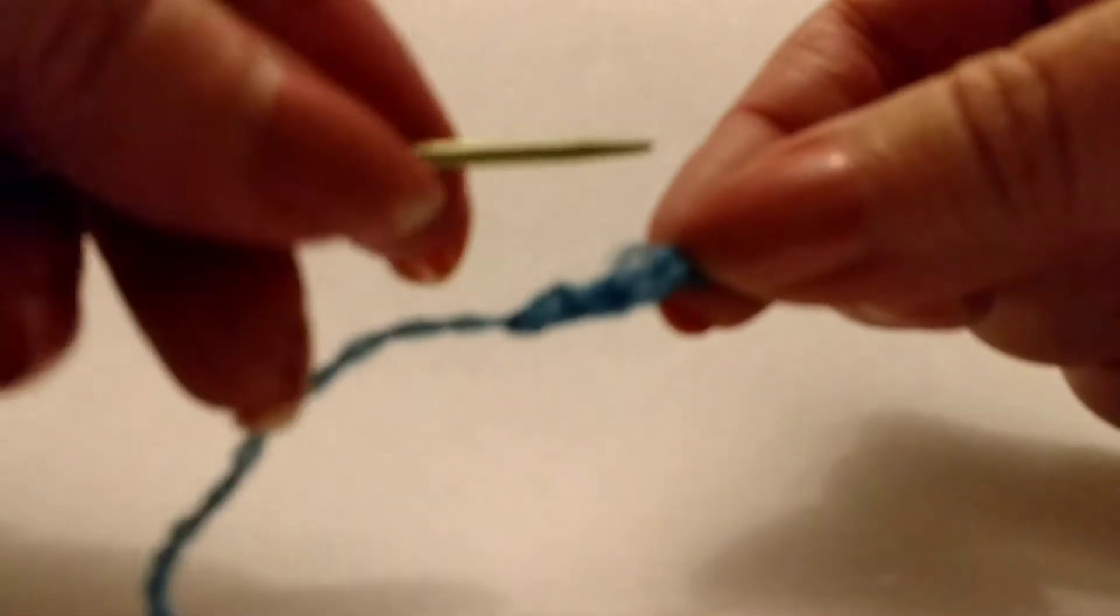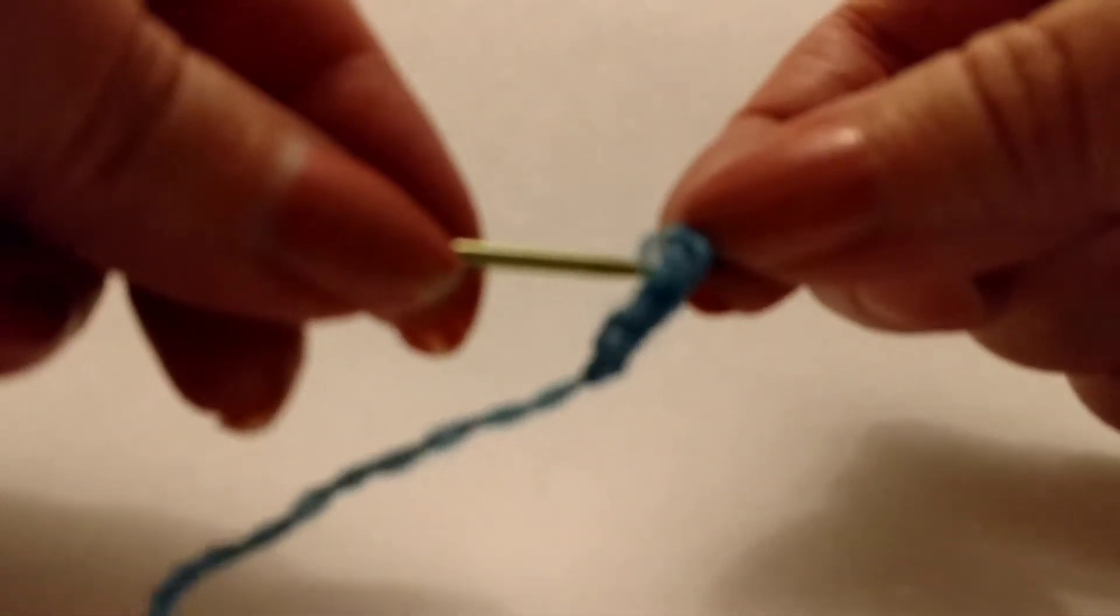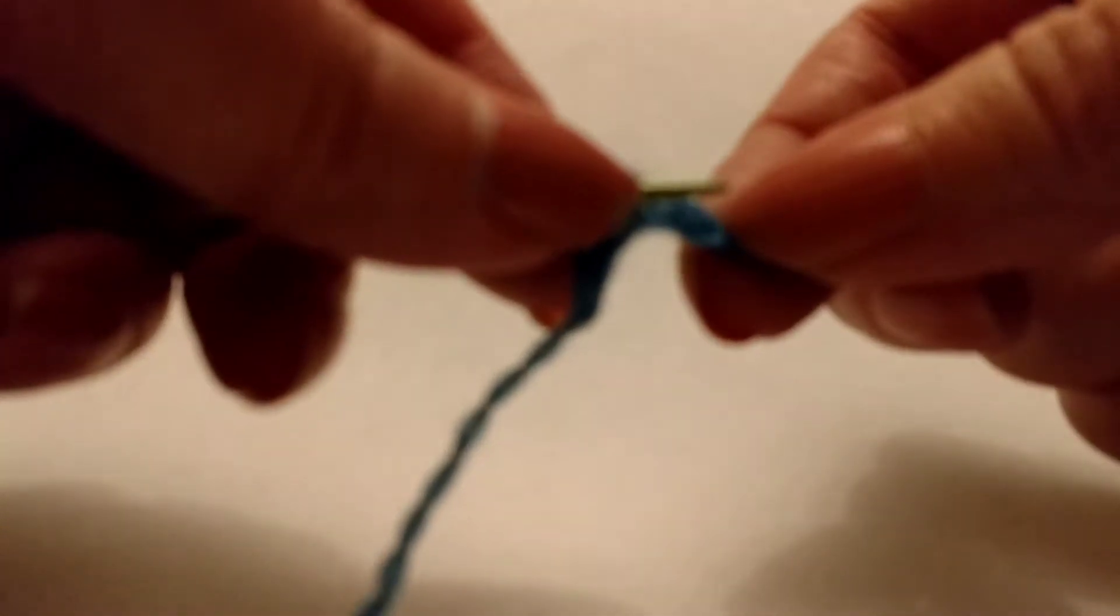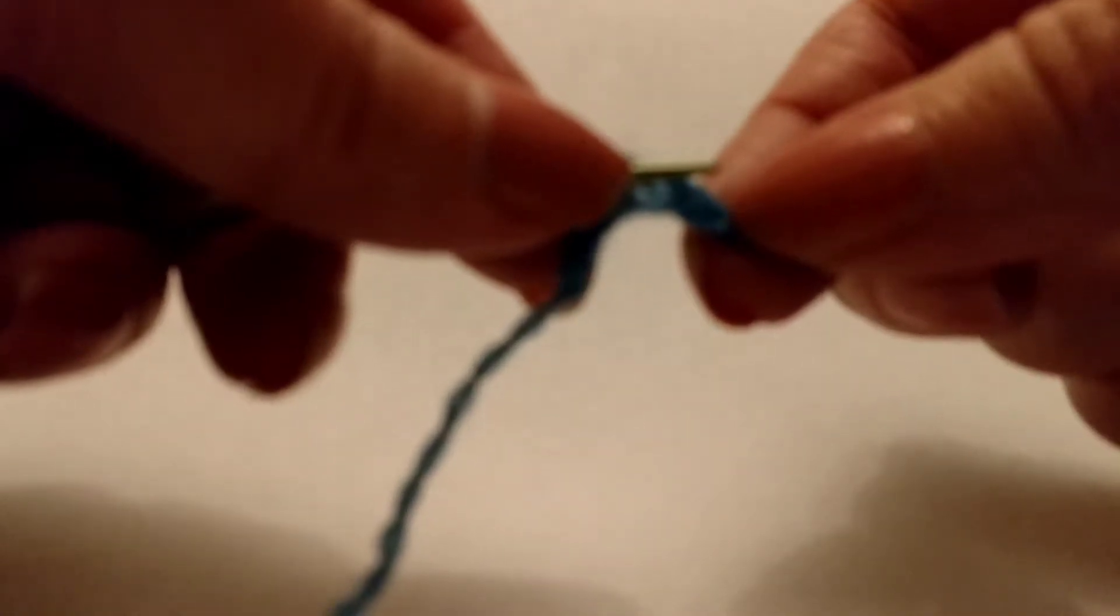You have all the bumps here on the back of your chain and all you're going to do is take your needle and slide it through one of the bumps on the chain. You're going to slide it from the back to the front.